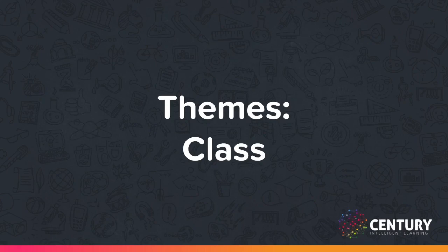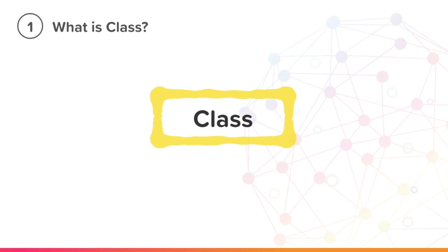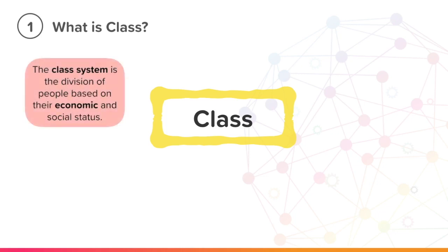This is the themes class. Before we begin, let's discuss what class means and look at why it is relevant. The class system is the division of people based on their economic and social status. This means the splitting of people by how much money they or their family has and the kinds of people they interact with.